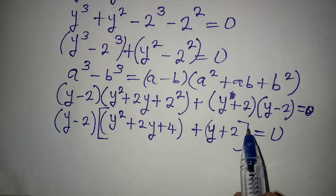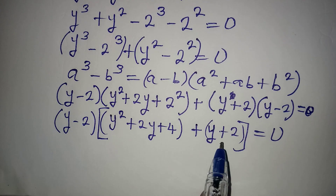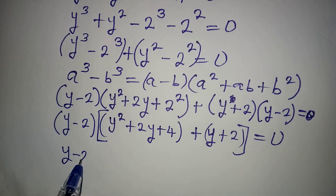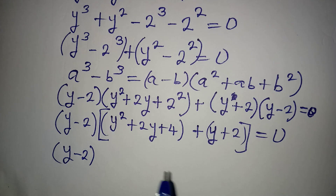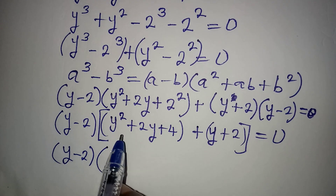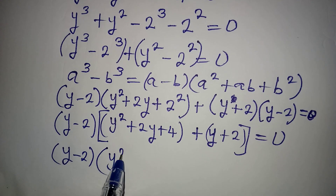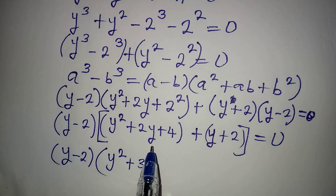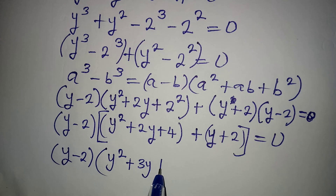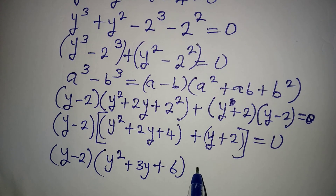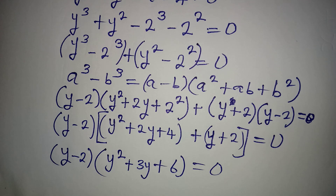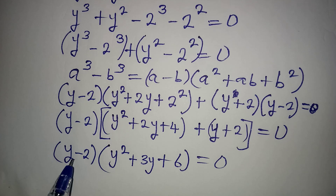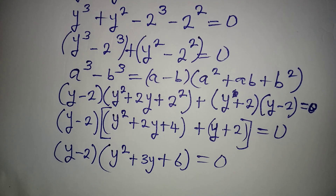Now that I brought out the common factor, I can add them together. I get y minus 2 — the common factor — times y squared, then 2y plus y gives plus 3y, then 4 plus 2 gives 6. Close that and everything is equal to zero. Now I'm going to apply the zero product rule for these two factors.